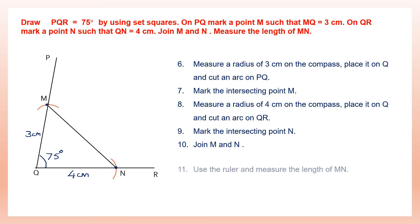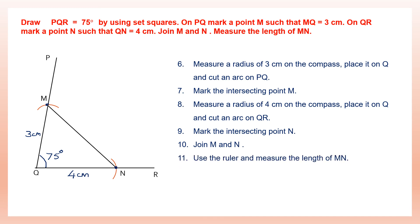Join M and N, then use a ruler and measure the length of MN. Place your ruler on MN along this line and measure. We have drawn an angle of 75 degrees using two set squares — one for 45 degrees and the other for 30 degrees. We marked M on PQ at 3 centimeters, N on QR at 4 centimeters, joined MN, and now you measure the length. Thank you children.